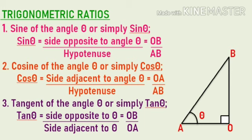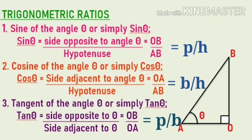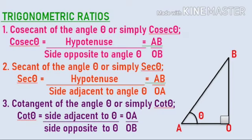The third ratio is tangent of angle theta, or simply tan theta. It equals the side opposite to angle theta, that is OB, divided by the side adjacent to theta, that is OA. So to summarize: sine theta equals perpendicular by hypotenuse, cos theta equals base by hypotenuse, and tan theta equals perpendicular by base.